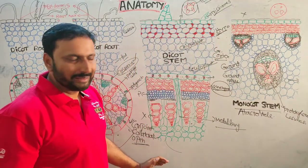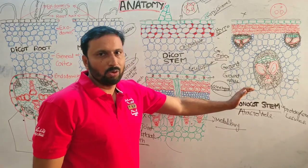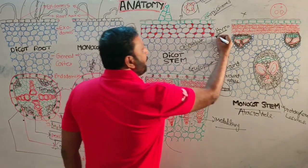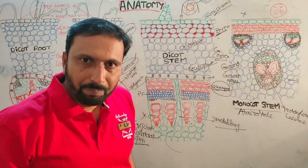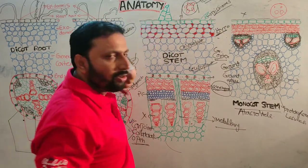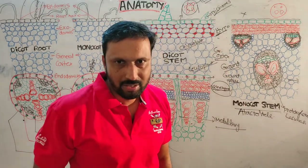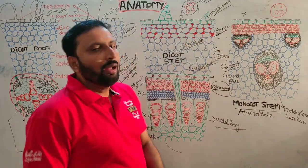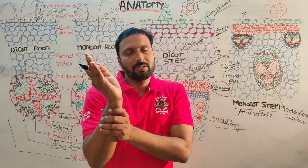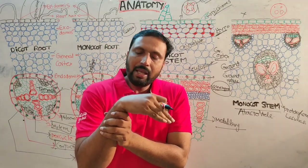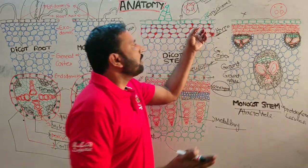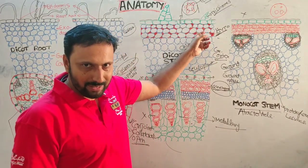In dicot stem, the hypodermis is made up of collenchyma. The collenchyma cells have cell wall thickening at the cell corners, giving flexibility to plant parts so they bend but do not break.